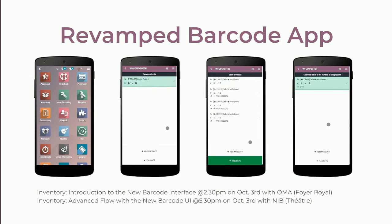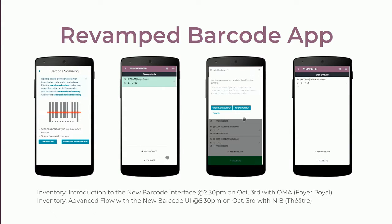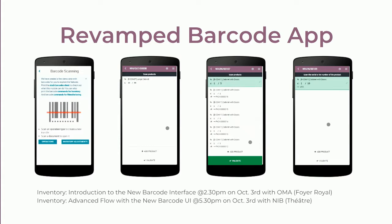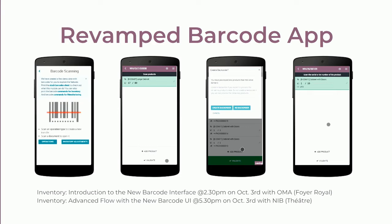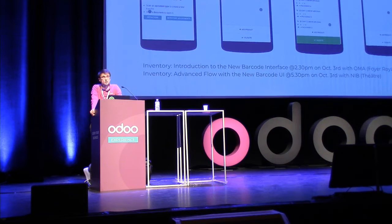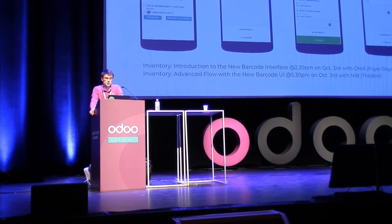Another feature is the revamped barcode app. There are no major extra behaviors added, although you can now scan a lot directly without needing to scan the product and then the lot separately, saving scans. But the main change is a rethought interface so the operator can focus on the actions they need to perform — clearly seeing which products to pick and in what order. For more details, see the presentations from Orion or Nicolas this afternoon.